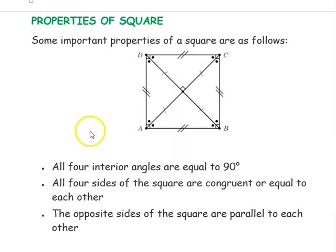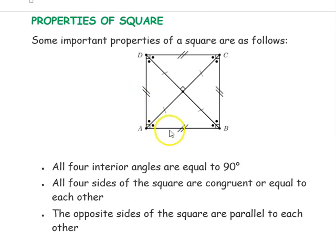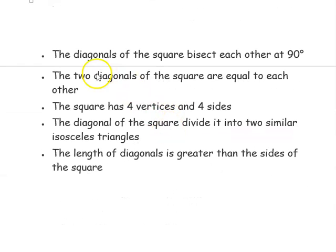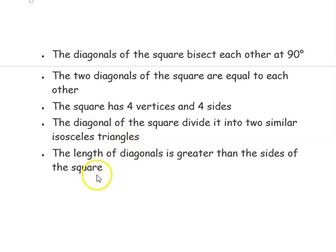Properties of square: All four interior angles equal 90 degrees. All four sides are equal to each other. Opposite sides are parallel. The diagonals bisect each other at 90 degrees and are equal to each other. The square has four vertices and four sides. The diagonals divide the square into two similar isosceles triangles. The length of the diagonal is greater than the side of the square.